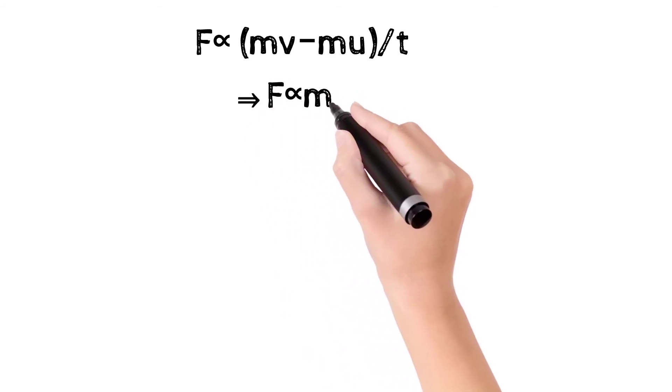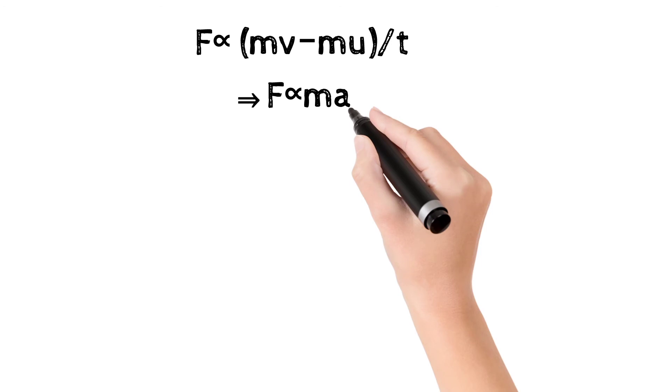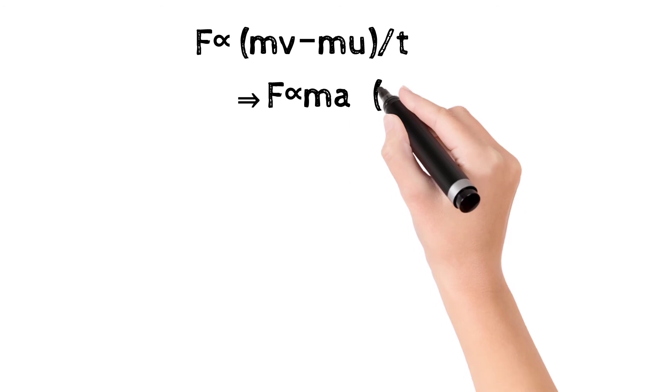F is directly proportional to ma, because acceleration is change in velocity divided by time.